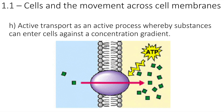Welcome back to Ms. Clark Does Science. Last time we were talking about osmosis as a way of water diffusing down a concentration gradient. Today we're going to learn about the only way that you need to know how things move against a concentration gradient — by active transport.